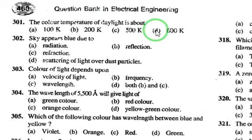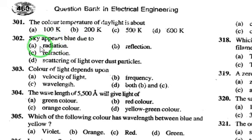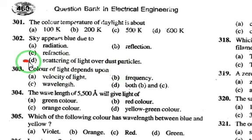The color temperature of daylight is 6000 Kelvins. The sky appears to be blue due to scattering of light over dust particles, so the answer is option D.